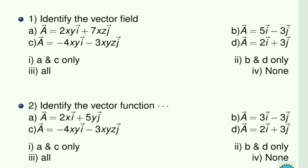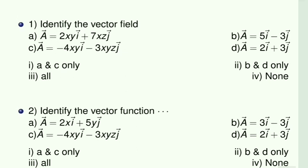First question is: identify the vector field. Four options are given, and we have to find what are the vector fields. A vector field means a vector representing a particular point, so we have to take care of the point.